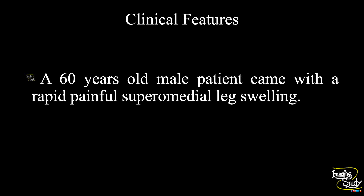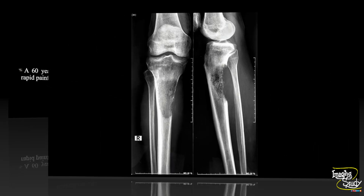Let's see what we have on X-ray. These are the AP and lateral views of the X-ray of the upper leg, and you can see there is a lytic lesion involving the upper part of the tibia. We found an ultrasound report of this patient from around two months back, when there was no feature of bony destruction on ultrasound.